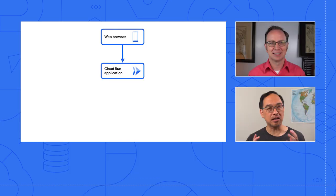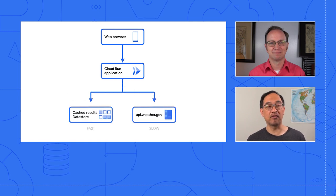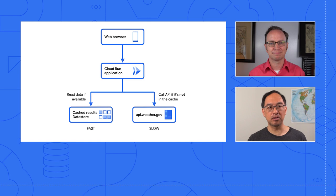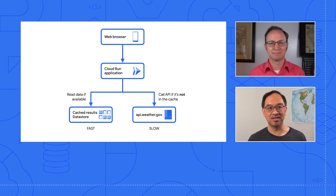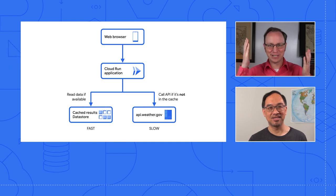So Wes, I'd imagine weather alerts don't change second by second. Is there an opportunity to cache these alerts? Yeah, that's a great idea, Martin. By caching those weather alerts, the app can respond faster to users, and our bandwidth bill is reduced. We also use up less computing resources for our friends at weather.gov. Sounds like a win-win-win.